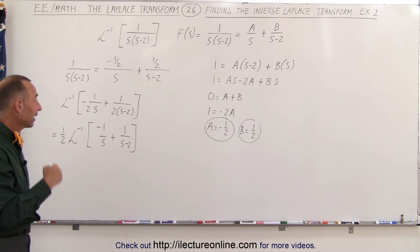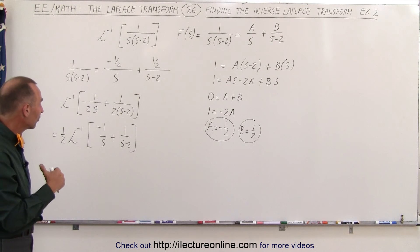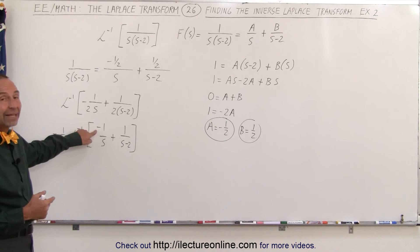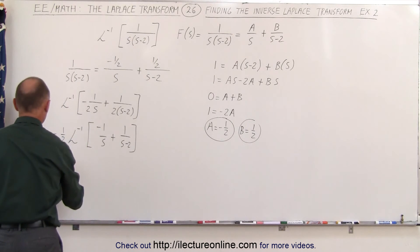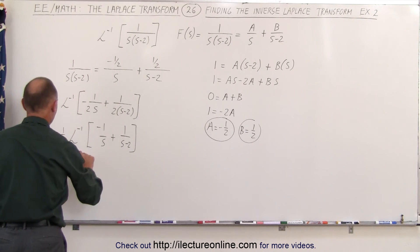Now the inverse Laplace transform of 1 over s is the unit step function. Of course with the minus, that becomes minus unit step function. So this becomes 1 half times minus u(t).